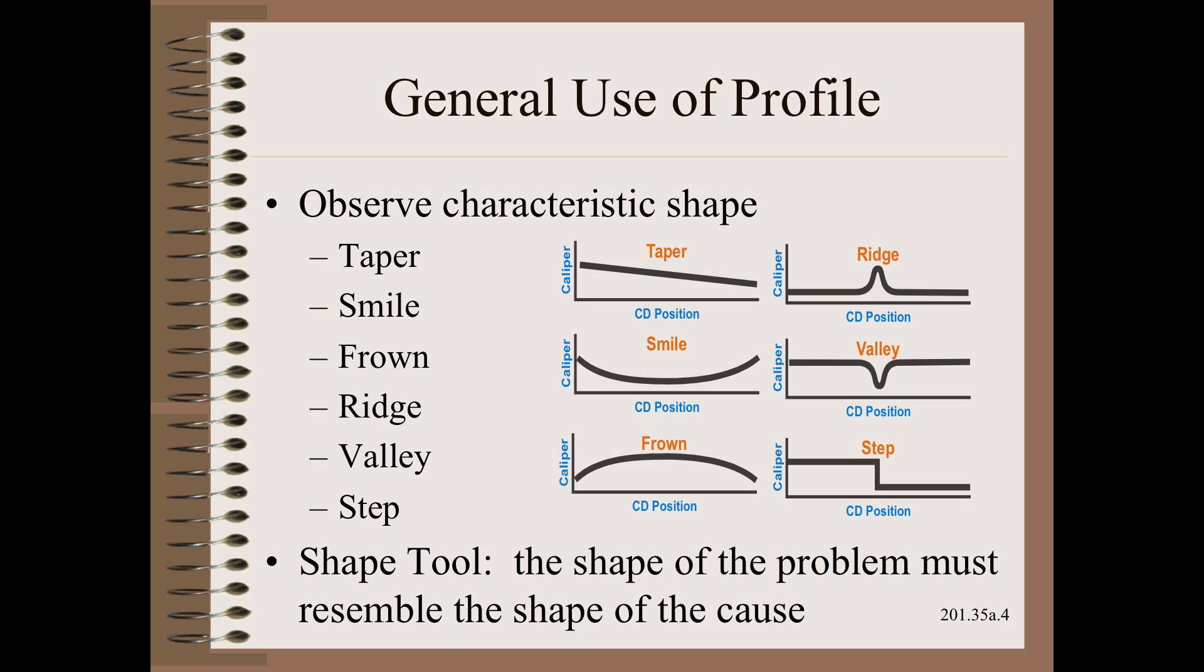Once we have a rough shape of the defect histogram to work with, we can use a powerful shape tool to screen possibilities. That is, the shape of the problem must resemble the shape of the cause.